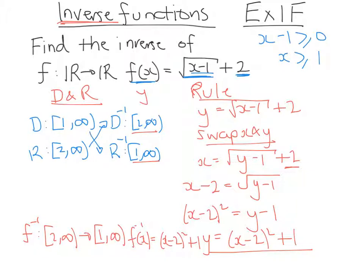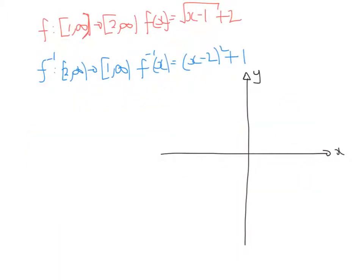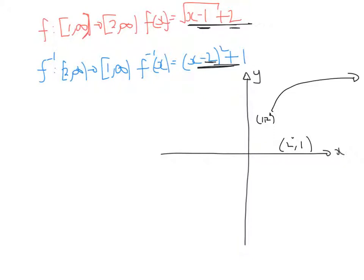I'll sketch both of these in just a second. What we're going to do is plot both the original function and the inverse on one graph. If we were to sketch this graph, it's been moved across one in the positive direction and up two, so its starting point will be one across, two up. And because it's a square root kind of graph, it'll come across like this. Now this parabola here, the turning point is across two and up one, and because it's a parabola we can sketch it like that.